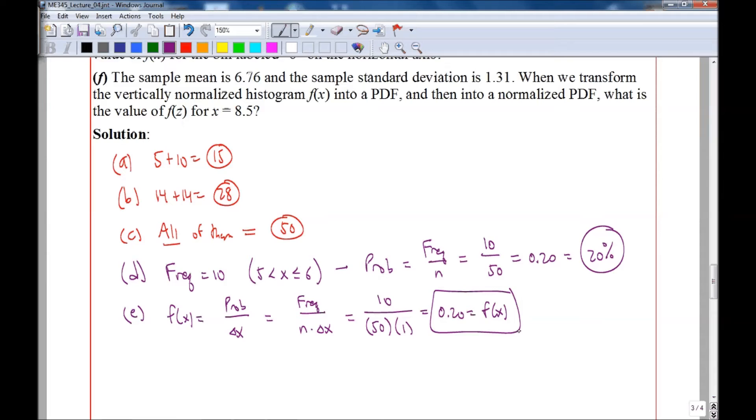Now the x itself we would call the midpoint of that bin, which would be 5.5, halfway between five and six.